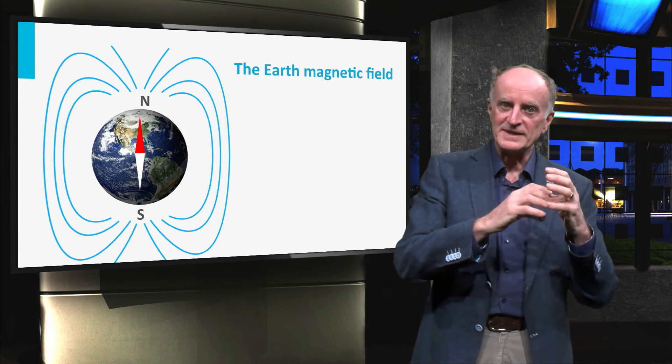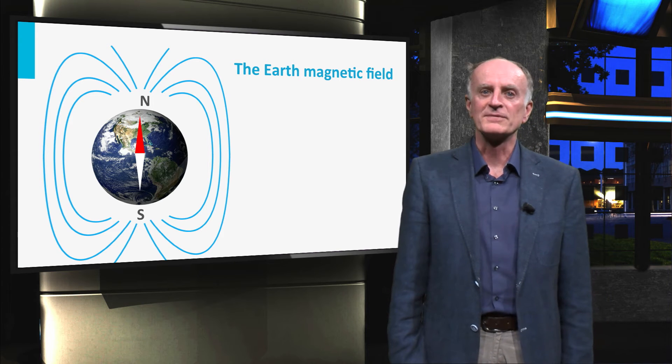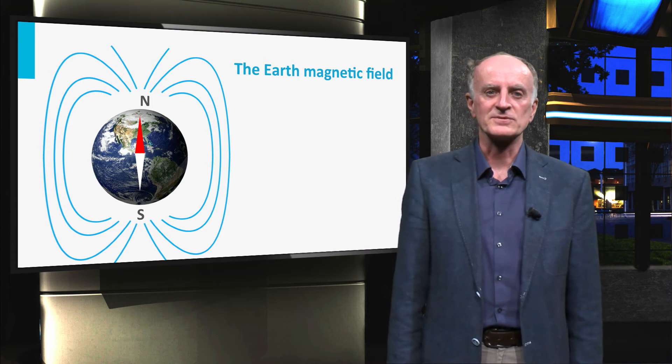Relative rotations between the inner and outer core generate the dipolar magnetic field of the Earth and the associated reversals.